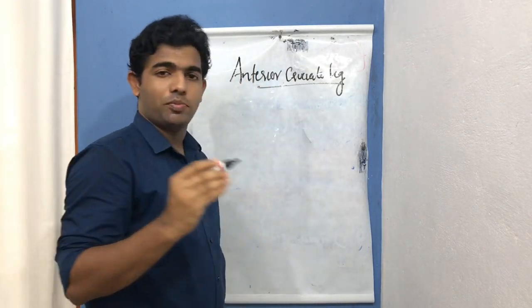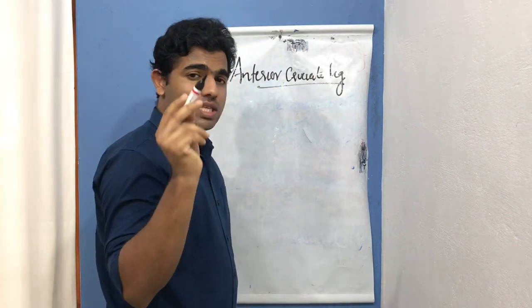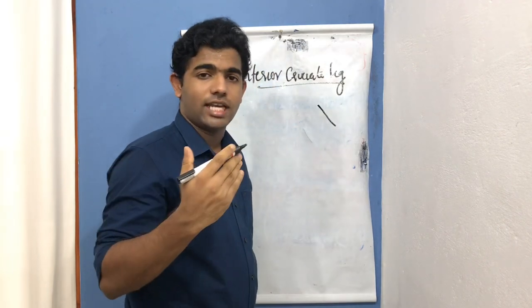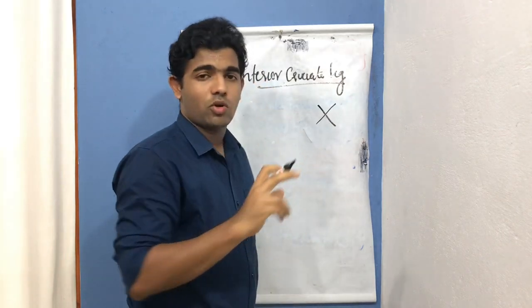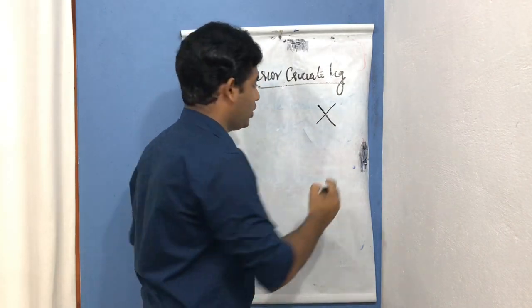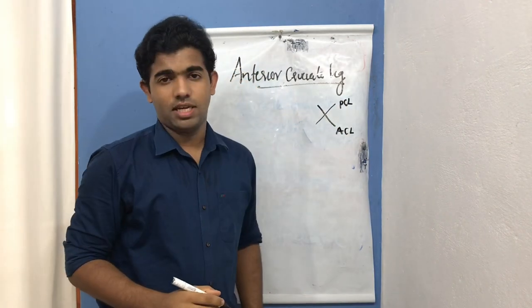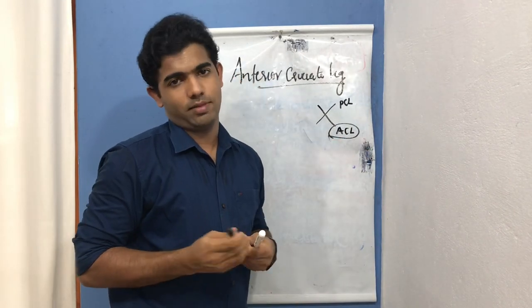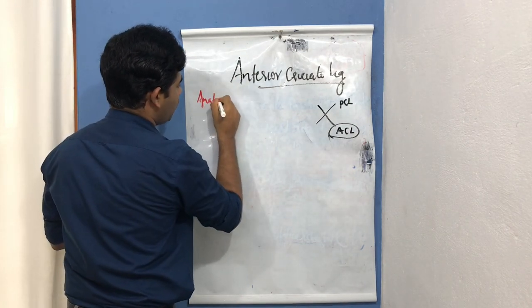The word 'cruciate' means something like a cross. There are two ligaments in our knee complex which form the cruciate complex: one which lies anteriorly, that is the anterior cruciate ligament, and the other which almost crosses it, that is the posterior cruciate ligament. Here we are going to discuss the first one, the anterior cruciate ligament, and now let us go on to its anatomy.